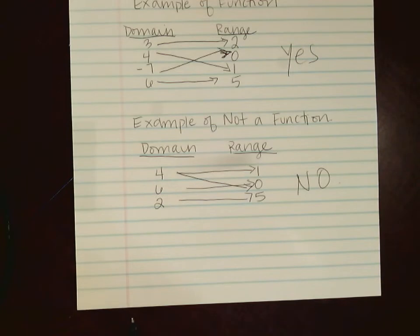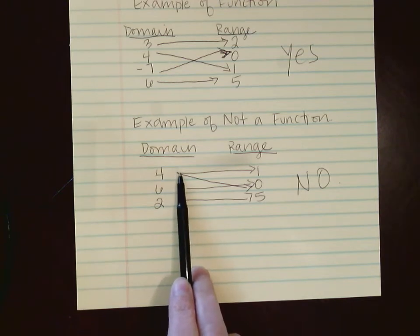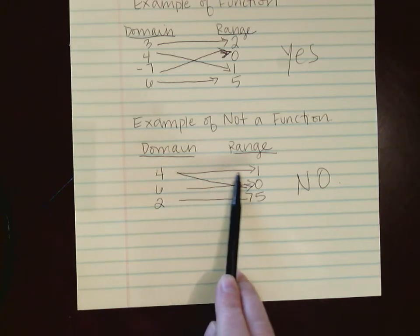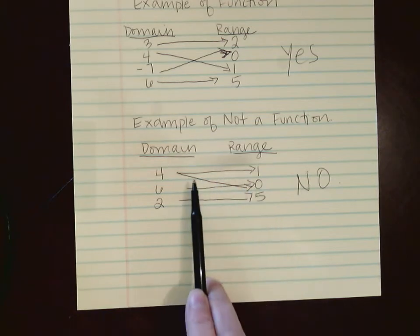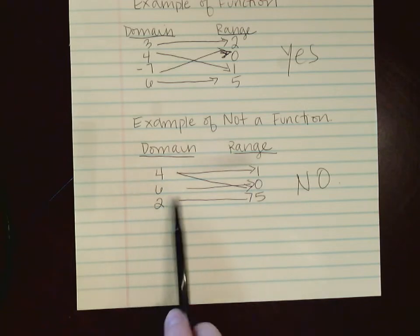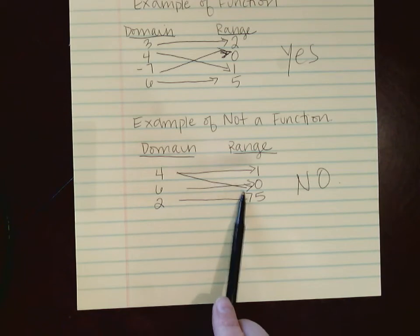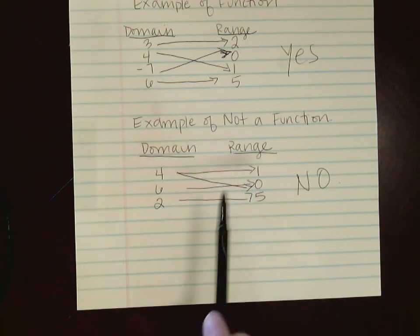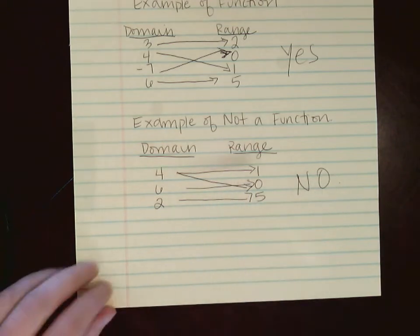To make that more clear, let's look at what makes an example of not a function. Look at the 4 in the domain — look where the 4 goes. It goes to the 1 and it also goes to the 0. That is why this relationship is not a function, because the 4 goes to more numbers in the range than just exactly one. So that's why that is not a function.